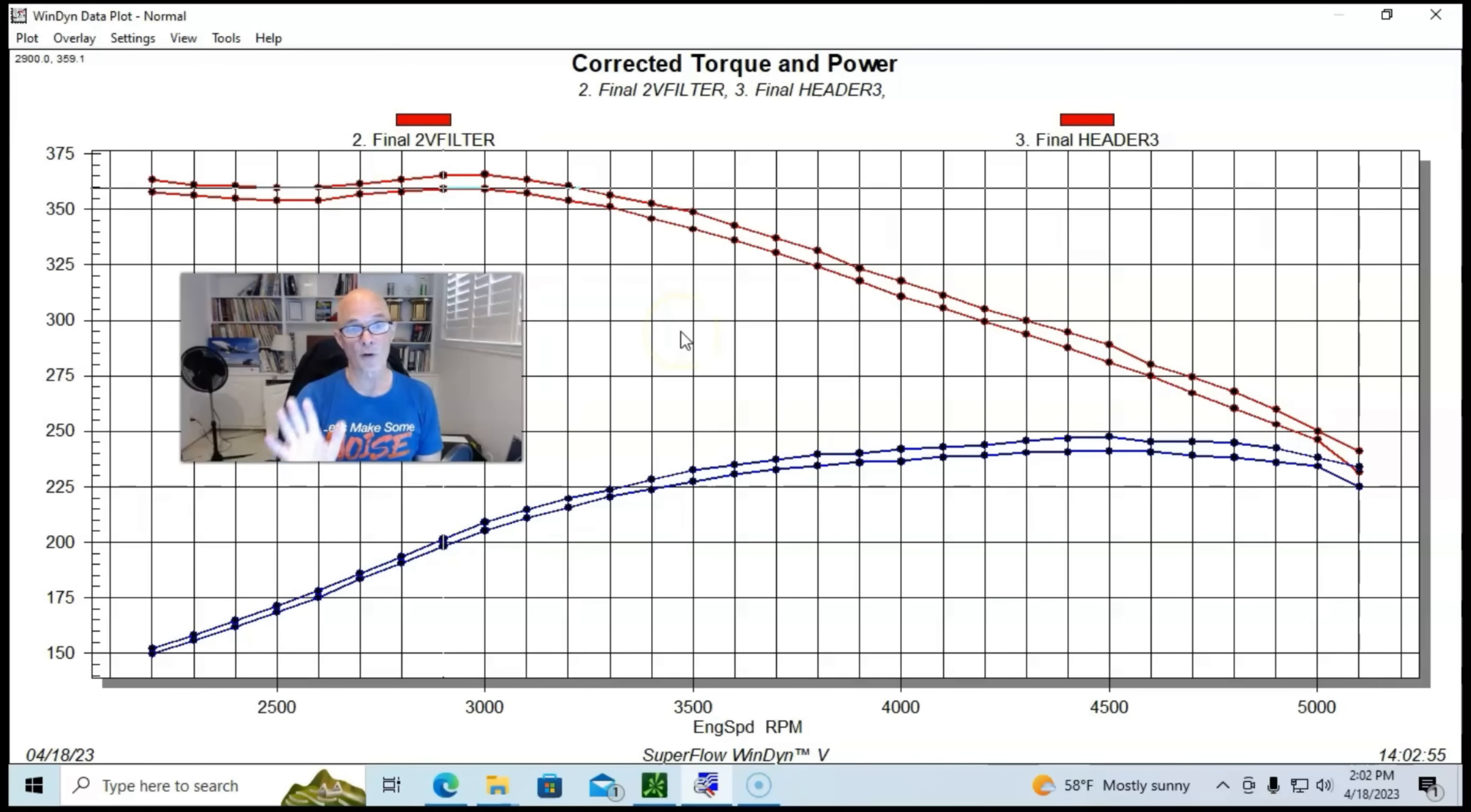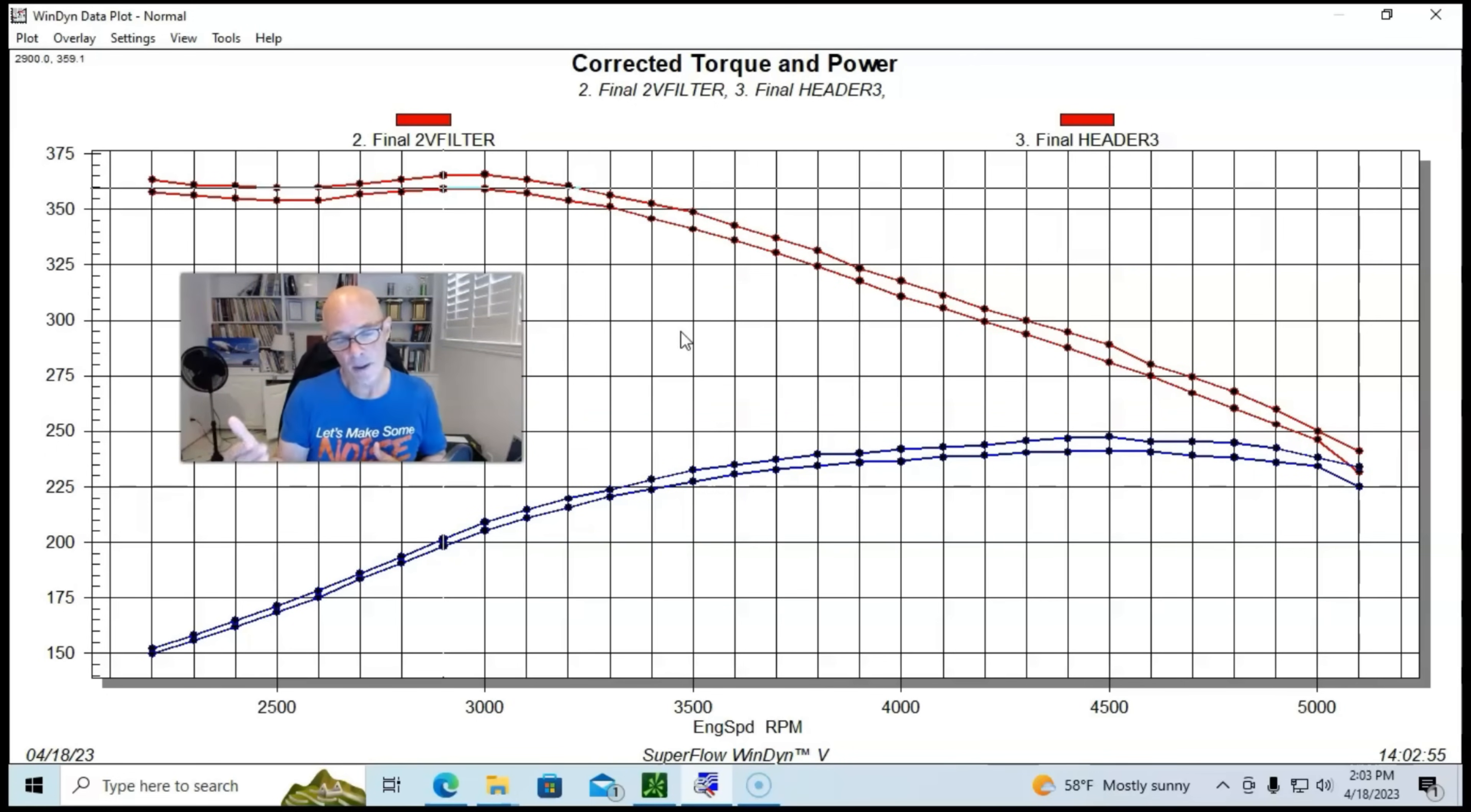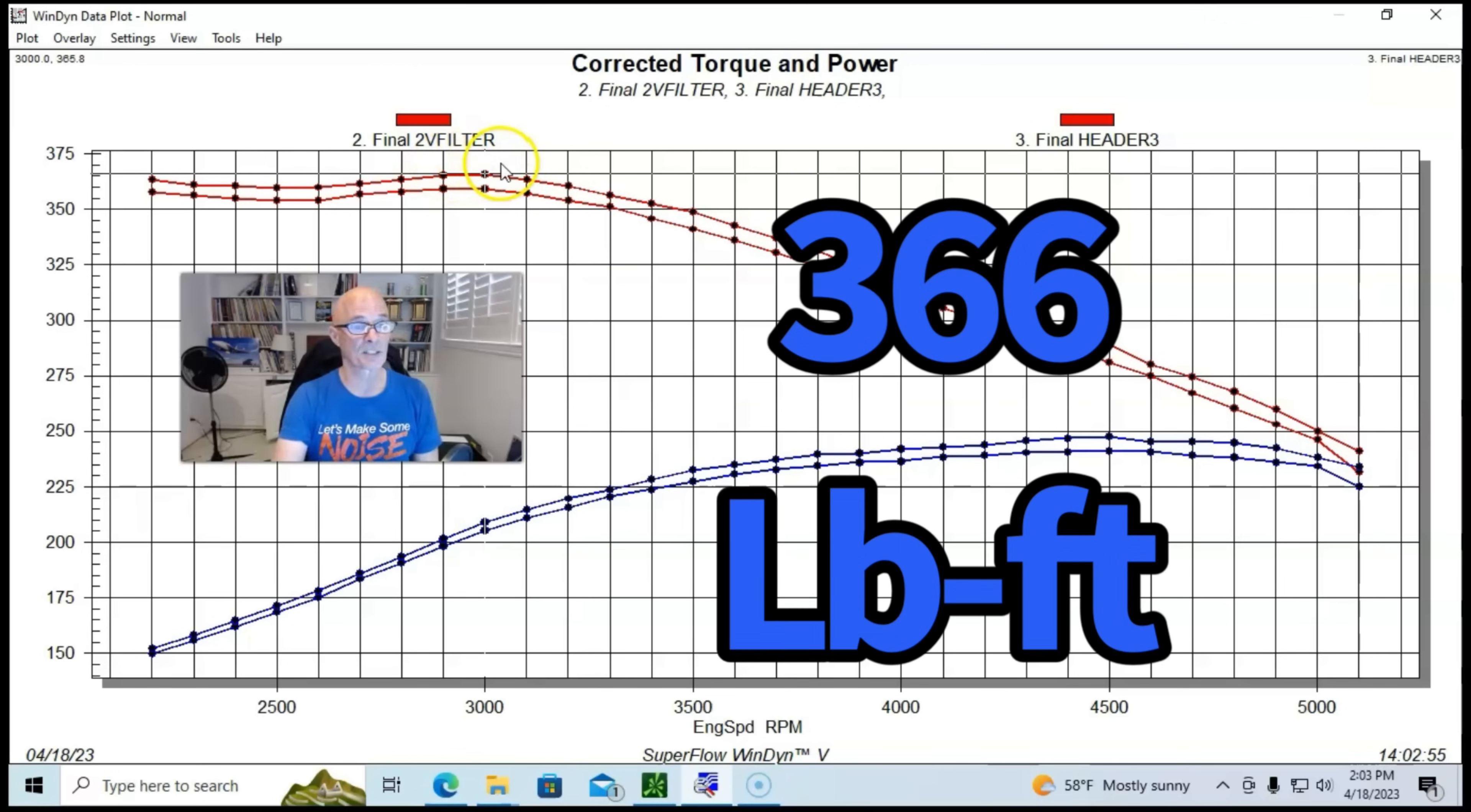Honestly, I expected a lot more from long tube headers compared to stock exhaust manifolds, but in this case on this two-barrel combination we're looking at seven or eight horsepower. The gains were fairly consistent all the way through the curve. Peak power was up to 248 horsepower, peak torque was up to 366 foot-pounds.